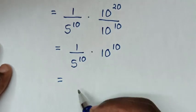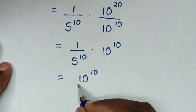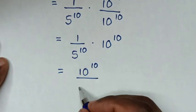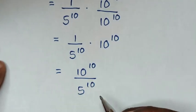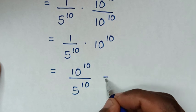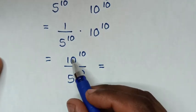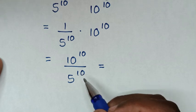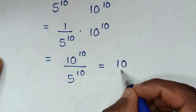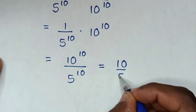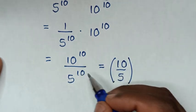So it will be 10 power of 10 over 5 power of 10. Using division of exponents with different base but same power, it will be 10 over 5, bracket, same power of 10.